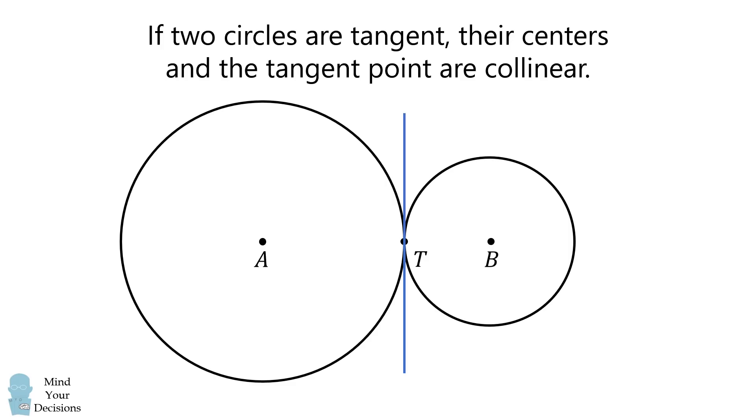By construction, AT will be perpendicular to the tangent line, and BT will also be perpendicular to the tangent line. Therefore, ATB is a straight line. This is true for both externally and internally tangent circles.